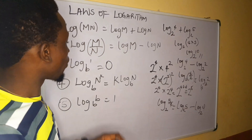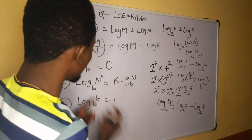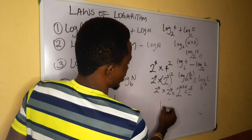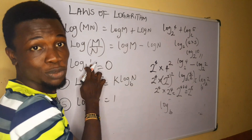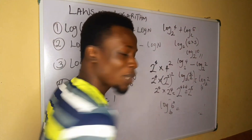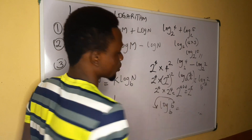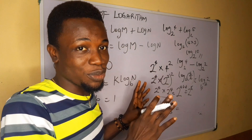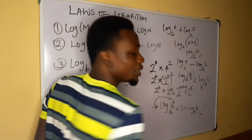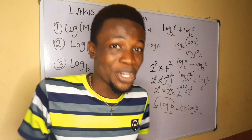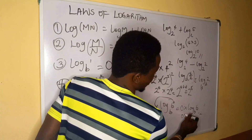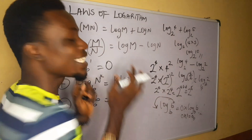The next law states that log of 1 base b equals zero. To prove this, recall that 1 equals b raised to the power zero. So we write log base b of (b raised to power zero). By the power rule of logarithm, the zero comes down, giving zero multiplied by log base b of b. Since log base b of b equals one, we get zero times one, which equals zero. That is why log of 1 base b equals zero.